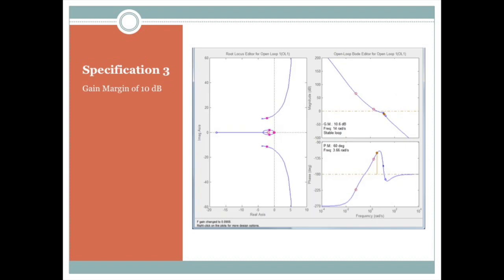For our third specification, we wanted a gain margin of 10 decibels, and here from the Sisotool graph, we can see from the top right graph that we have a gain margin of 10.6 decibels. So it meets our third and final specifications.